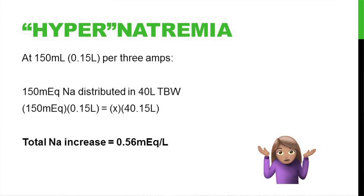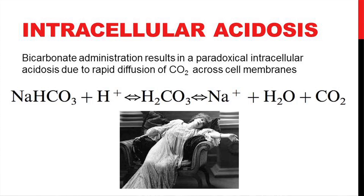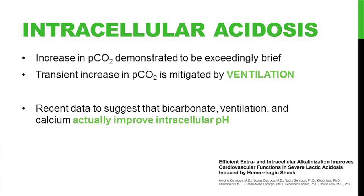There's also the theory that you can cause intracellular acidosis by giving bicarb: the body turns bicarb into CO2, the CO2 pressure in the blood goes up, and that diffuses across the cellular membrane. But the increase has been demonstrated to be exceedingly brief, and it's actually mitigated by ventilating the patient appropriately. There's actually recent data suggesting that with bicarb, ventilation, and calcium, you can actually improve intracellular pH.